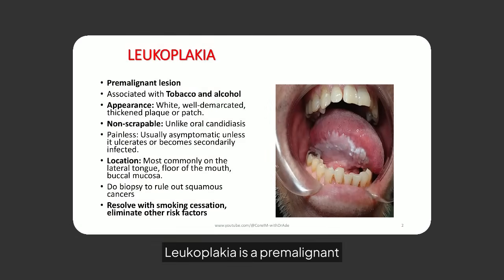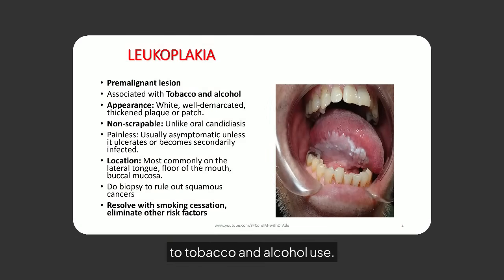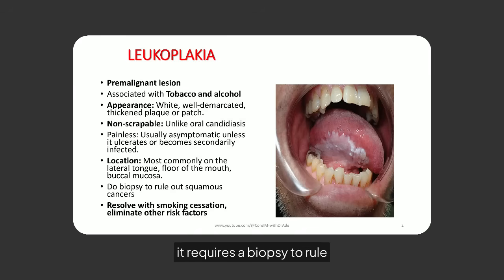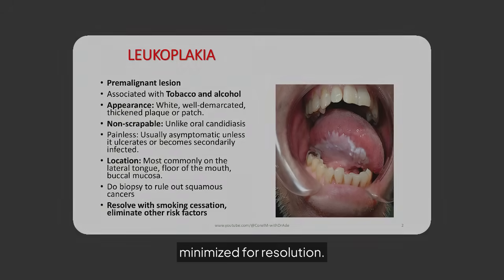Leukoplakia is a premalignant lesion often linked to tobacco and alcohol use. It appears as a white, non-scrapable plaque, commonly found on the tongue or mouth floor. While usually painless, it requires a biopsy to rule out squamous cell cancer. Risk factors should be minimized for resolution.